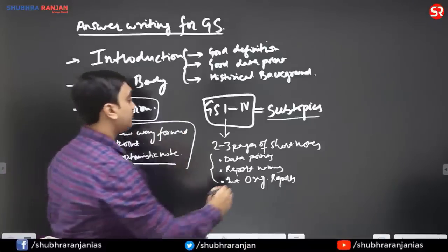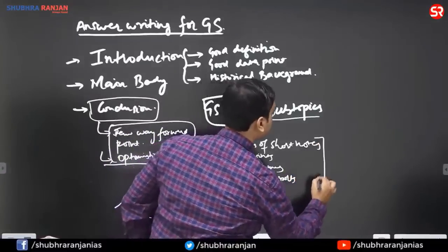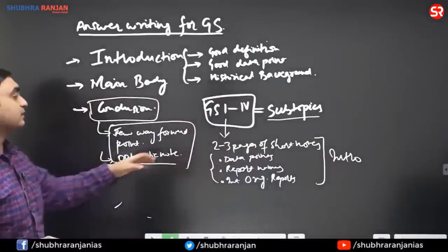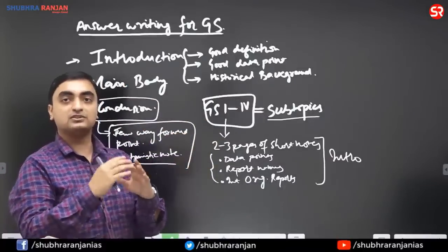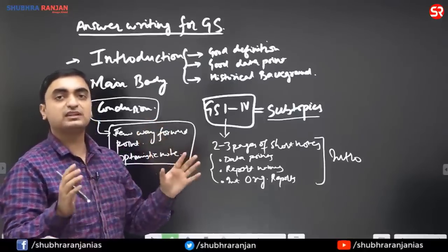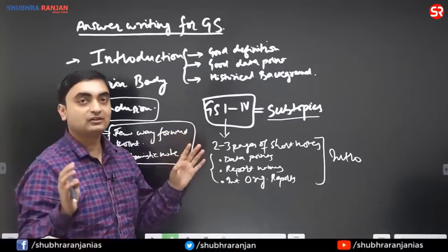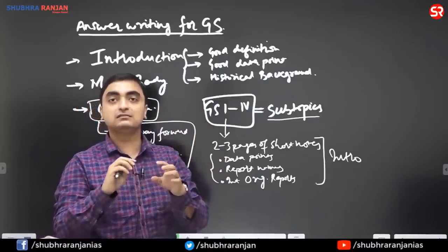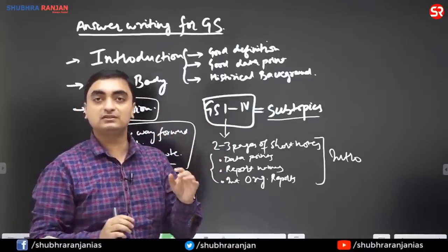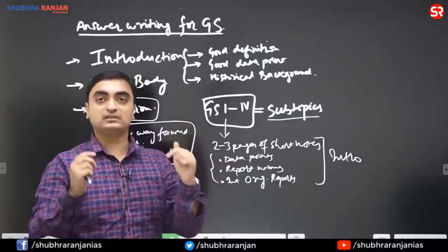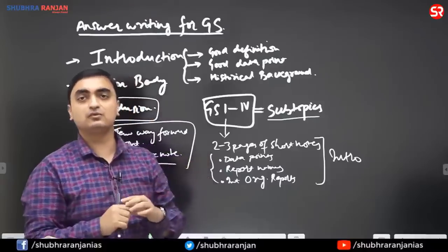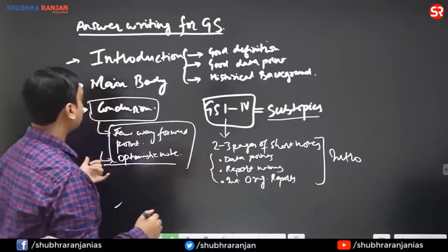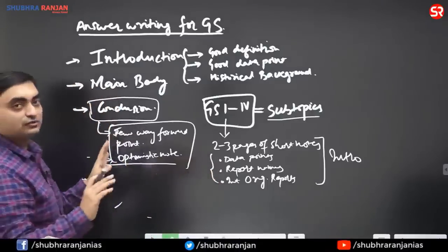Conclusion and introduction can easily be prepared if you have prepared each subtopic of GS1 to GS4 for two to three pages. Don't make lengthy notes — don't make notes of one whole notebook for one topic. Because you have to write your answers in 200 to 250 words, and not more than one question comes from one subtopic. 200 words is enough, and introduction and conclusion are done when your notes are prepared.